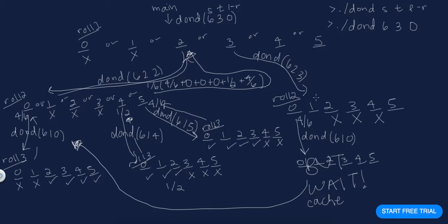Then I call DOND(6, 1, last roll = 1) — that hasn't been calculated before, so I need to compute it. I don't need to do two, three, or four because I immediately lose. Then I calculate DOND(6, 1, 5) — but wait, I've calculated that before, so I immediately return four out of six from my cache. This is why caching makes things faster. With more rolls, like T=6, you'd avoid repeating deep recursive calls because you've already computed them.